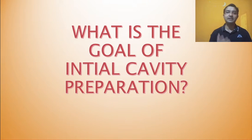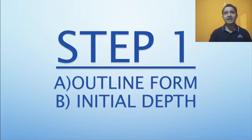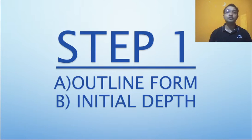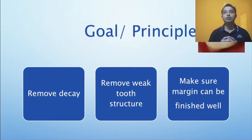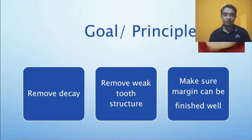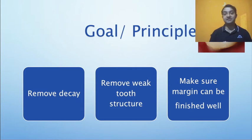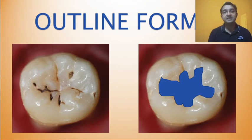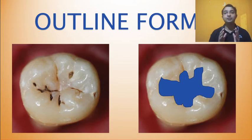The first step we are discussing today is the outline form and initial depth. I have divided this into two categories: part one is the outline form and the second is initial depth. The goal of the outline form and initial depth is to remove all decay and remove weak tooth structure. You don't want to create a cavity that ends up fracturing the normal tooth. The cavity preparation should also be accessible so that finishing and polishing burrs can reach the margin.